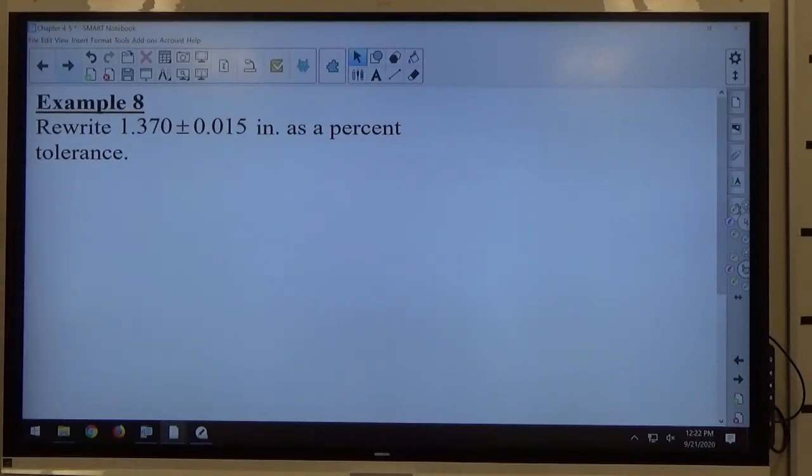Example 8. Rewrite 1.370 plus or minus 0.015 inches as a percent tolerance.